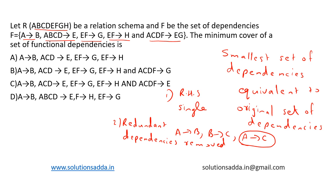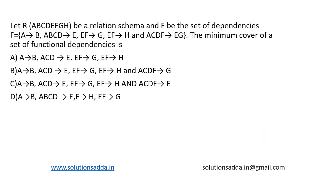Then we find the extraneous attributes and remove them — any extra attributes present in the LHS that are not necessary are also removed. Based on this concept, let's try to solve it.